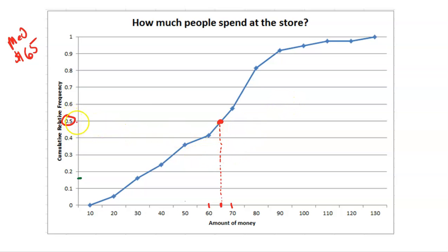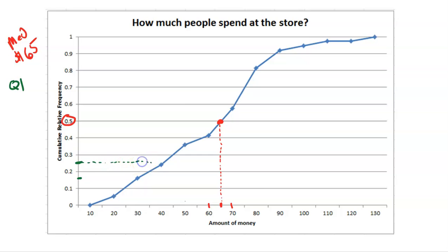So if we start with the cumulative relative frequency — the percentile that we want — we can determine what value represents that percentile. For example, Q1 is the 25th percentile, 0.25. We can come over and, doing a little bit of estimating, come down — it's roughly around $40. And what about Q3, the third quartile? That's the 75th percentile. Coming over and then straight down — somewhere around $80 would be the third quartile.